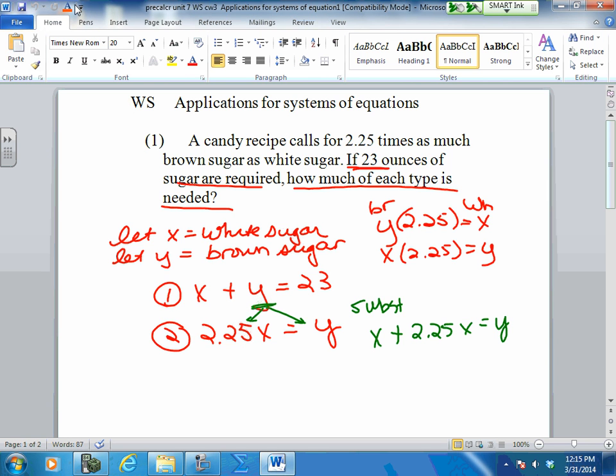And I could say x plus 2.25x equals 23. So now I only have x in here. If I add my x's together, 3.25x equals 23, and I solve for x. When you put this in your calculator, this doesn't come out to be a whole number. And that's okay. We're going to round to three decimal places.